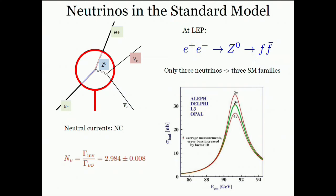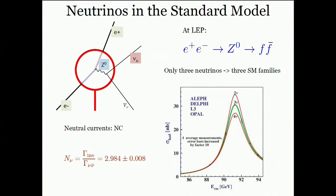Here is one of the most important legacy plots from CERN in the LEP era, with this invisible width measurement for the Z zero. I hope I have convinced you that neutrinos have been instrumental in constructing the standard model, but also they have already taught us the way out of the standard model, thanks to the fact that in spite of their weak interactions, we are surrounded by very intense sources of neutrinos.